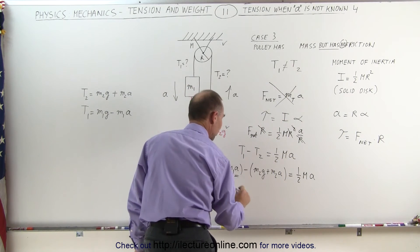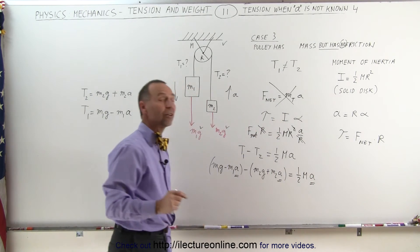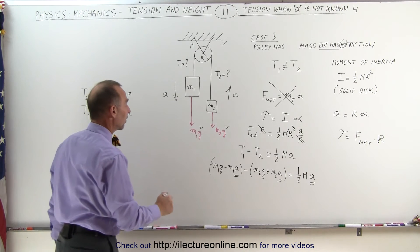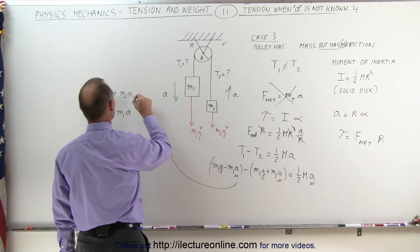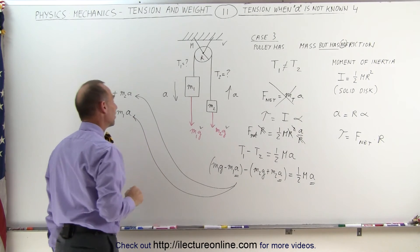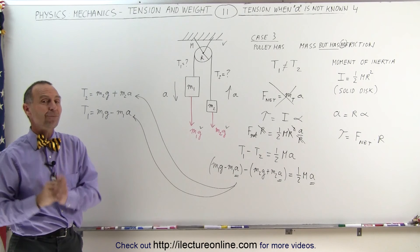And now notice we have an acceleration here, we have an acceleration there, and an acceleration there which allows us to find the acceleration of the whole system now. Once we have the acceleration we then plug that back into these two equations and that's how we find tension 1 and tension 2 in the case of pulley where the pulley has mass.